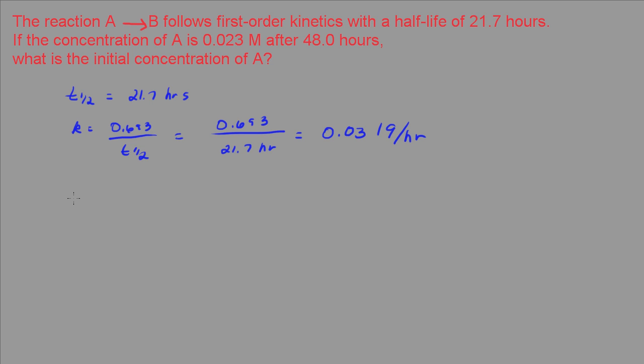Now, what I need to do is use my integrated rate law, and from that I can solve for the initial concentration of reactant A. The integrated rate law looks like this: the concentration of A at the initial concentration of A, and that's equal to a negative KT. I think where most people are going to have problems with this is just in the math itself.